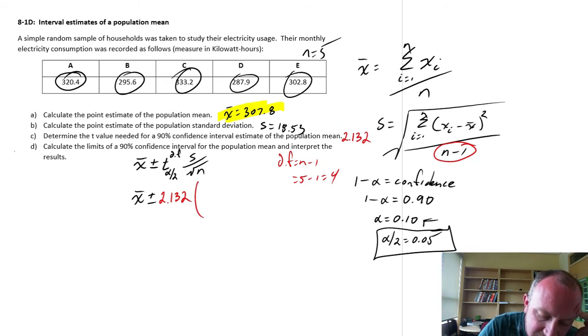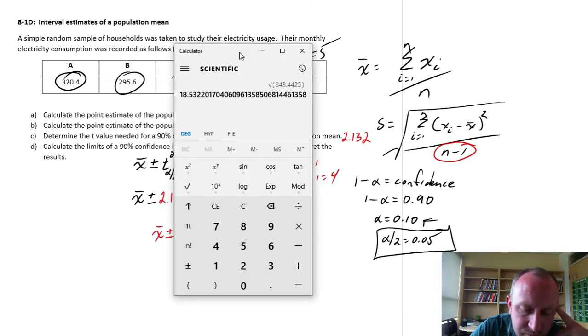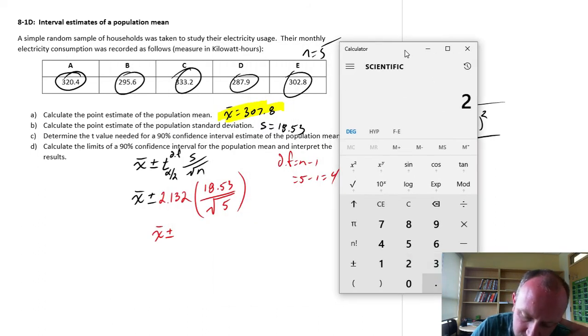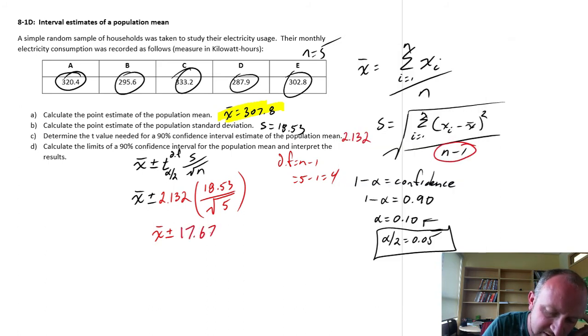Now to get the limits for part D, well, we just need to calculate what this margin of error is. We already have our standard deviation is 18.53, divided by square root of our sample size, which is 5. So x̄ plus or minus, let's calculate what this is going to be. 2.132 times 18.53 divided by square root of 5 equals 17.67. 17.67 is our margin of error.